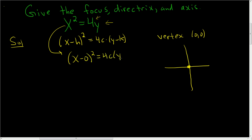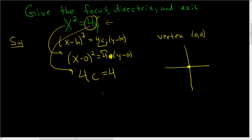We have 4c times (y minus 0). You notice that 4c has to be equal to 4, so that's what you do. Whenever you want to find c, you just take this coefficient and set it equal to 4c, so 4c equals 4. Divide by 4, and you get c equals 1. It's positive, so the parabola opens up. C is 1.